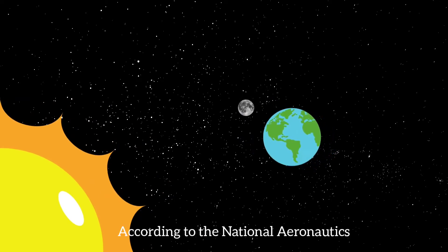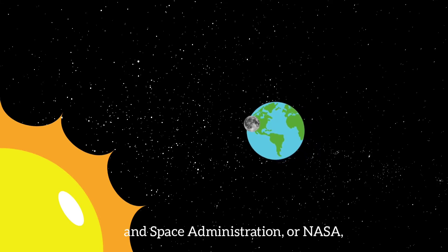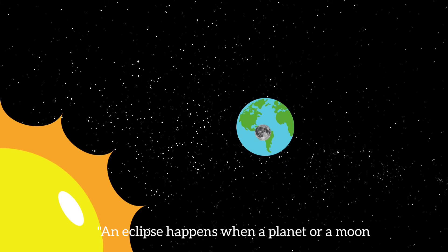According to the National Aeronautics and Space Administration or NASA, an eclipse happens when a planet or a moon gets in the way of the sun's light.